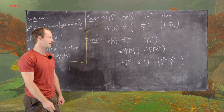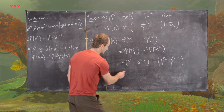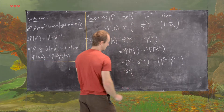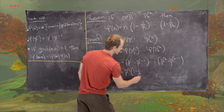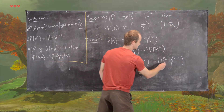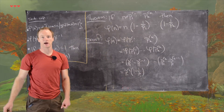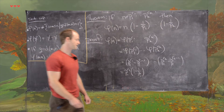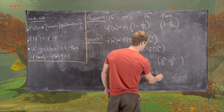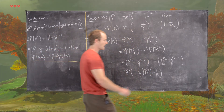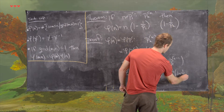Next, what we'll do is factor the largest power of the prime as we can from each binomial. That gives us p1 to the r1 times 1 minus 1 over p1 — and I just realized I forgot my subscripts here, but I'll add those — all the way through p2 to the r2 times 1 minus 1 over p2, and finally pk to the rk times 1 minus 1 over pk.